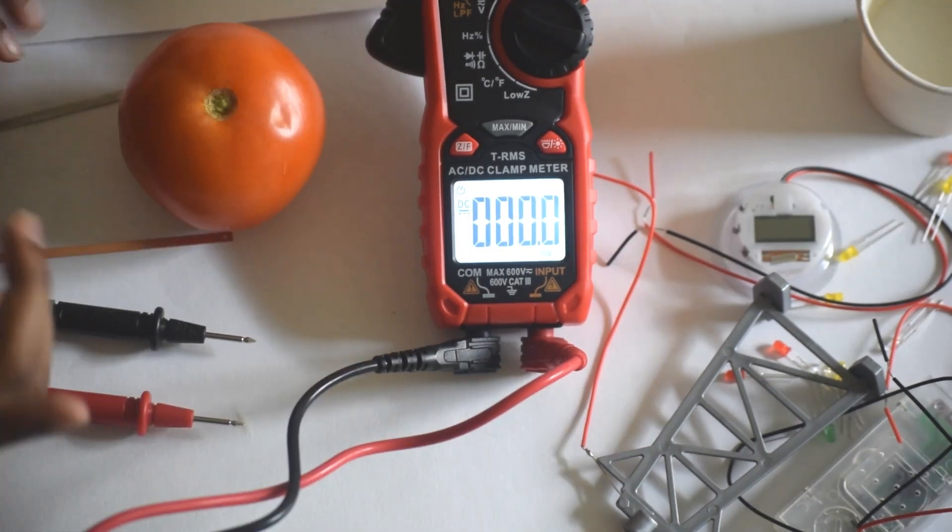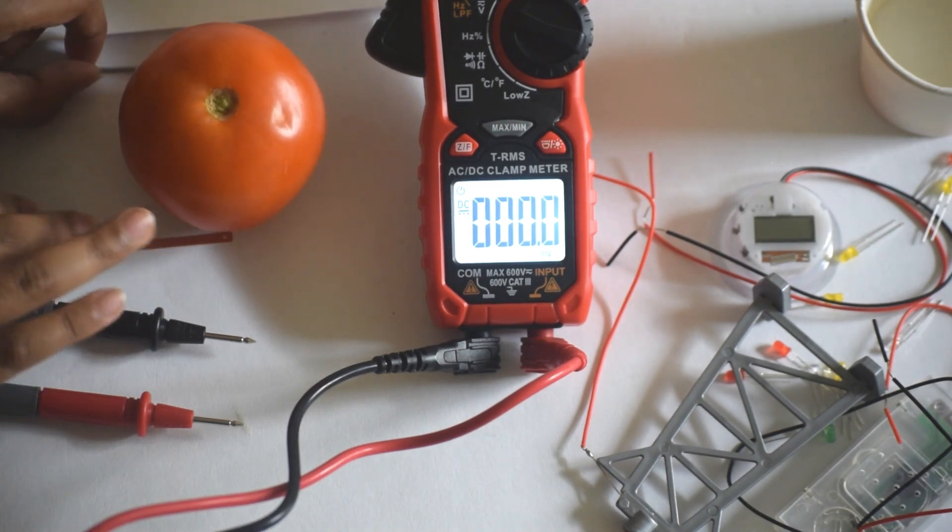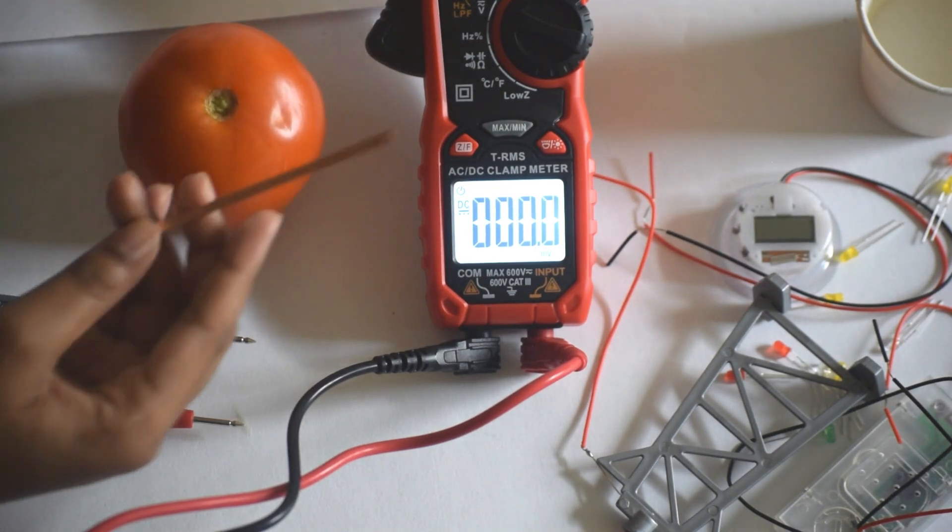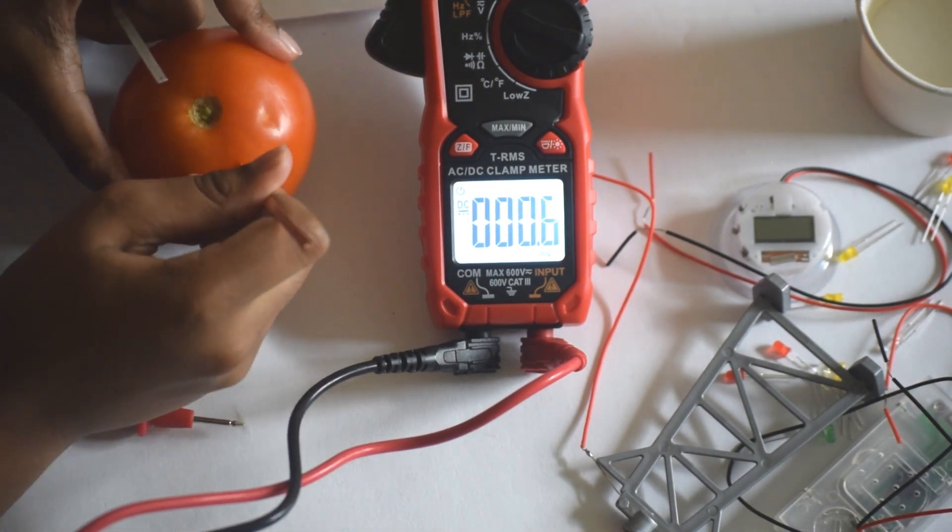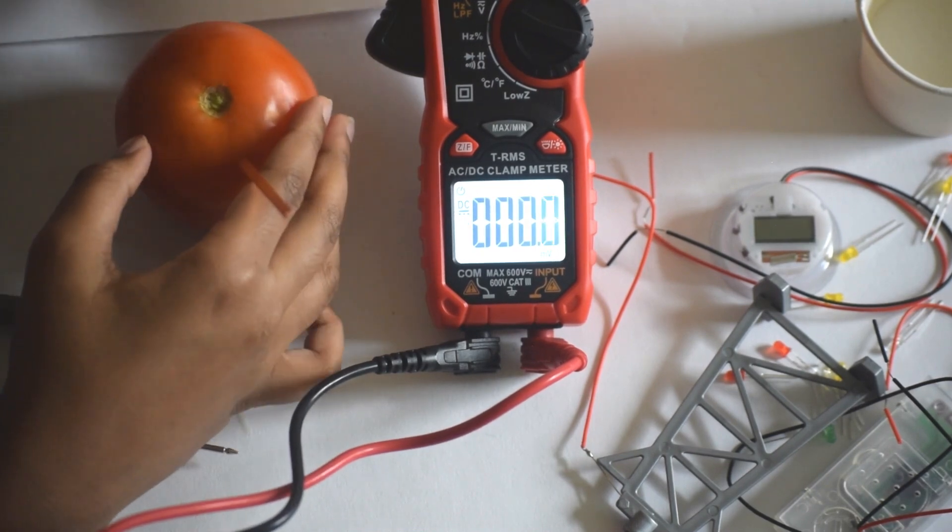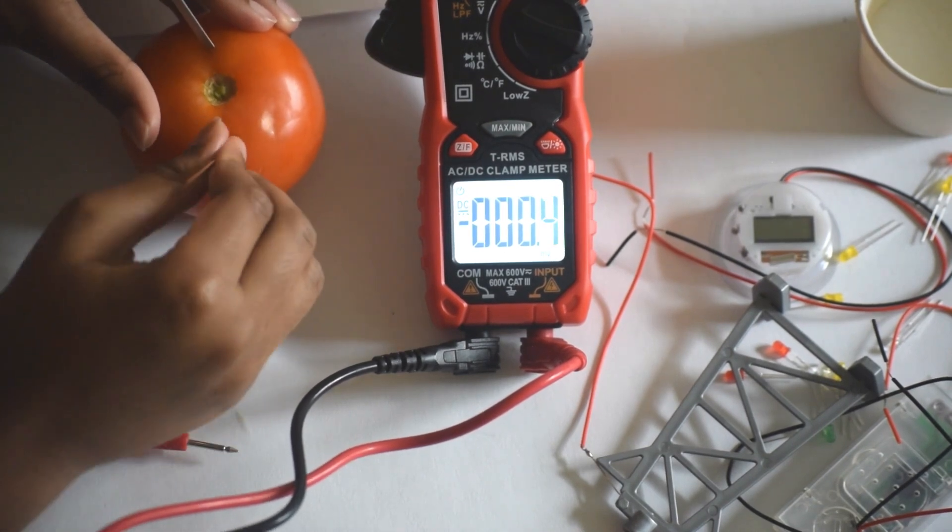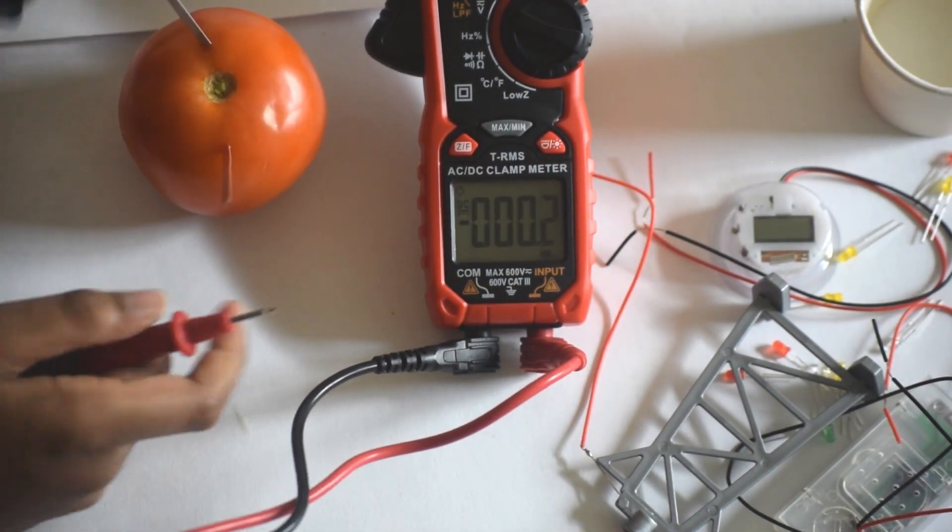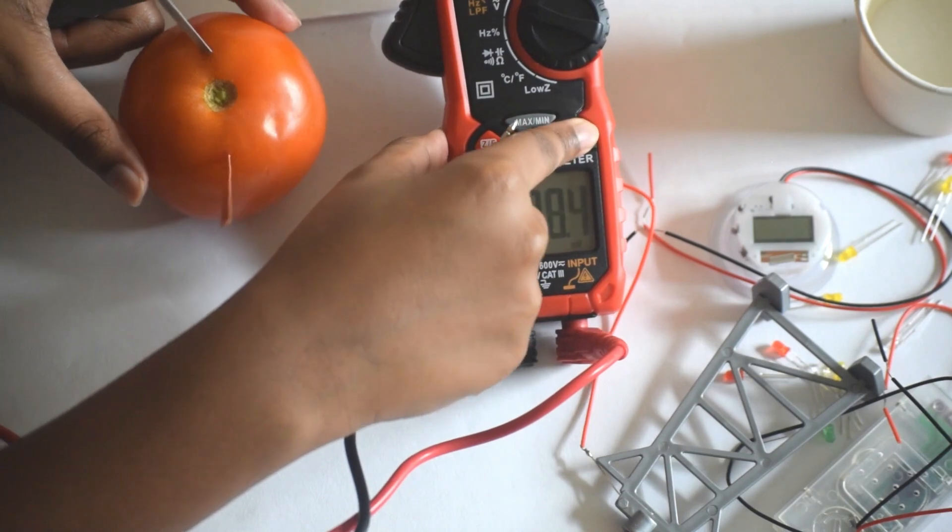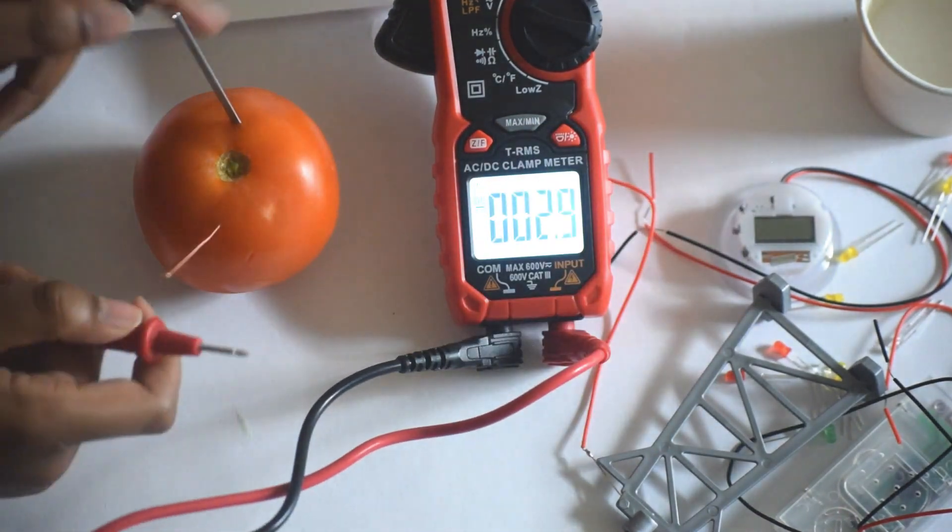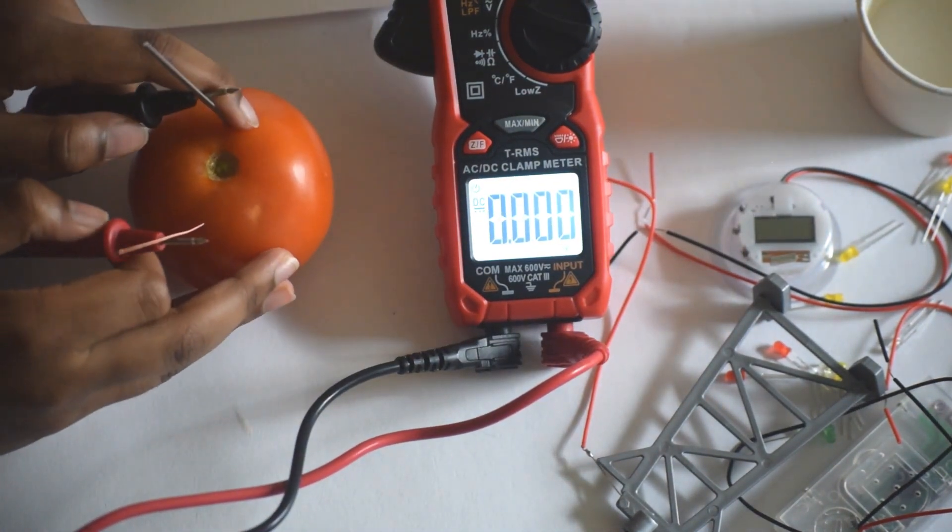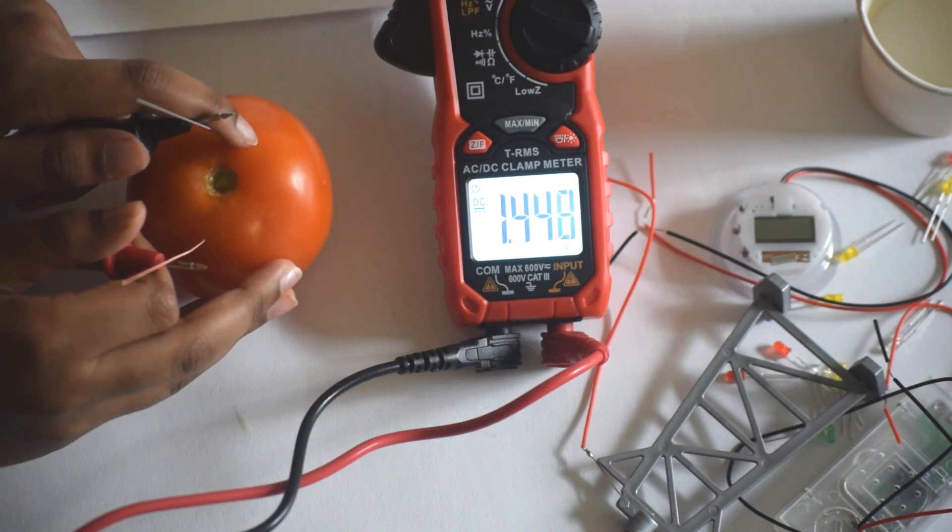Our next experiment is on tomato. Let's insert these electrodes again. Look at that, it's around 1.5 volts.